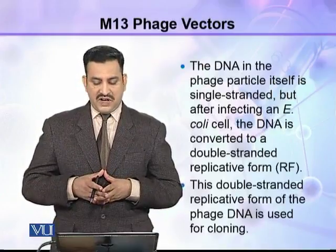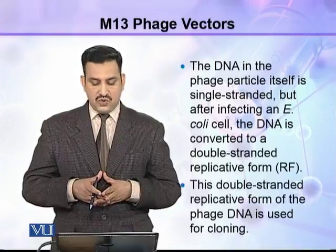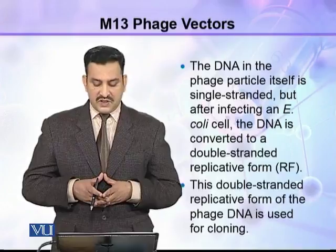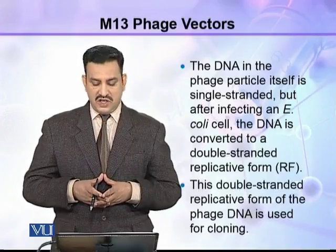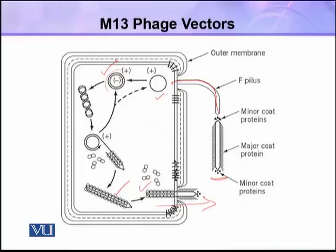The DNA in the phage particle itself is single stranded, but after infecting an E. coli cell the DNA becomes a double stranded replicative form. This double stranded replicative form of the phage DNA is used for cloning. M13 phage enters the bacterial cell through the F pilus, and after entering it is single stranded but soon becomes double stranded replicative form, then starts replication and new particles are formed which emerge out of the cell. This is important for cloning purposes.